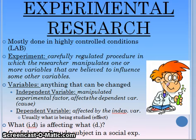In psychology we use what's known as the scientific method. You all should know about this because you've done it every year in elementary school and beyond. The scientific method is used in psychology because psychology is a science — it is empirical, it's based on empirical research. We observe some phenomenon or behavior, or select a topic to be studied. We formulate a hypothesis and make predictions. The third step is that we do the research, we actually do the testing, the empirical studies.